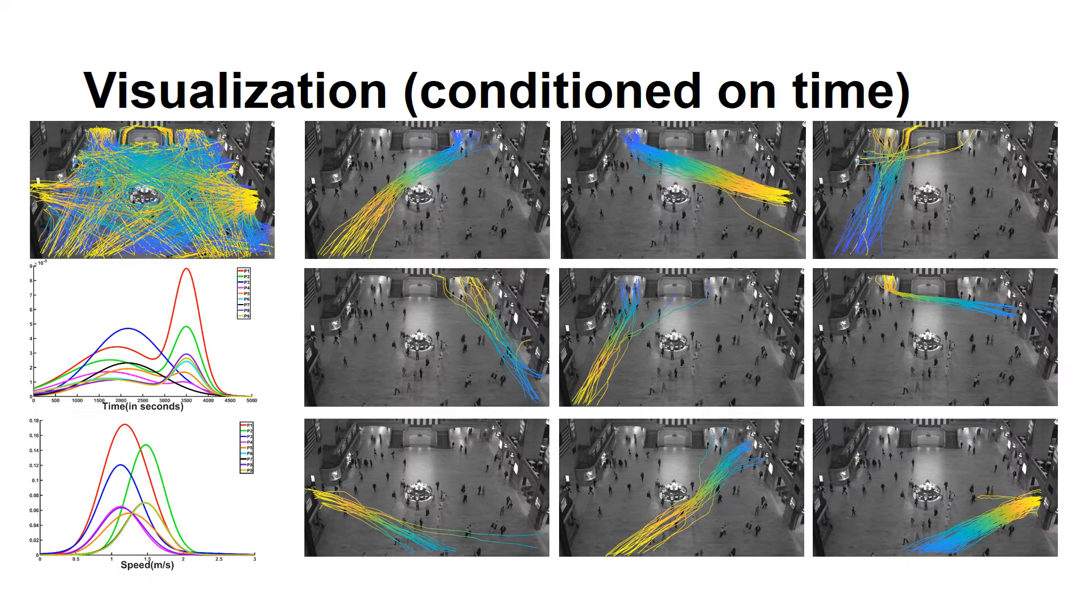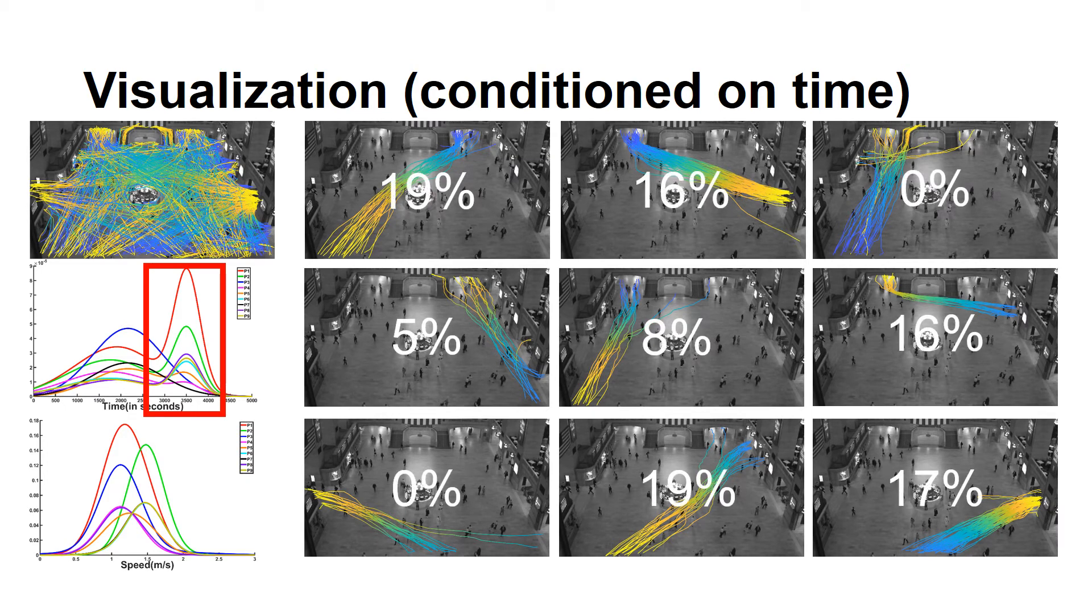After previous full mode visualization, we show conditioned visualization. Assuming users are particularly interested in a certain period of time, our method can show how prominent each space flow is within that period. In this case, the user is interested in the period indicated by the red box. We use percentages to indicate the prominence of each space flow. This is very helpful in identifying, for example, during rush hours, what major space flows are.